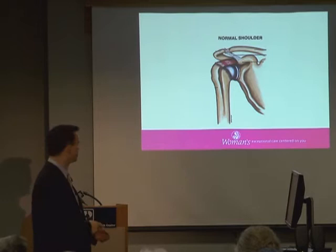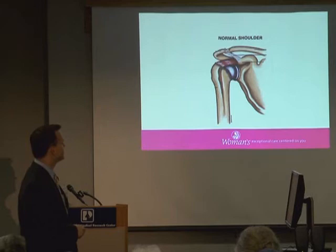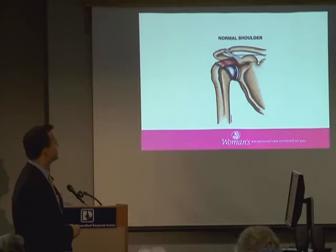Right above the shoulder joint, above the humeral head, is the rotator cuff. This is the supraspinatus tendon, one of the tendons of the rotator cuff. Right above that is another bone called the acromion. It's important to remember that the rotator cuff is sandwiched between the humeral head and the acromion — which is important when we talk about shoulder impingement and rotator cuff tendinitis.